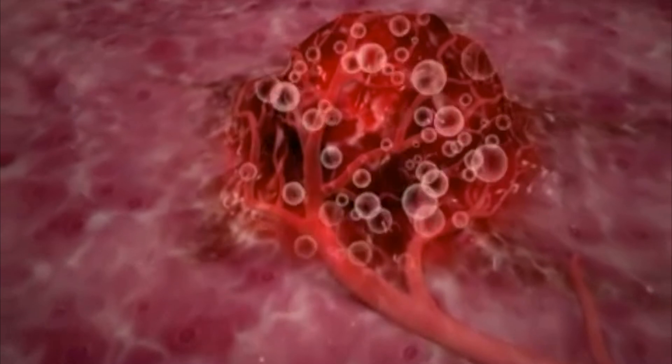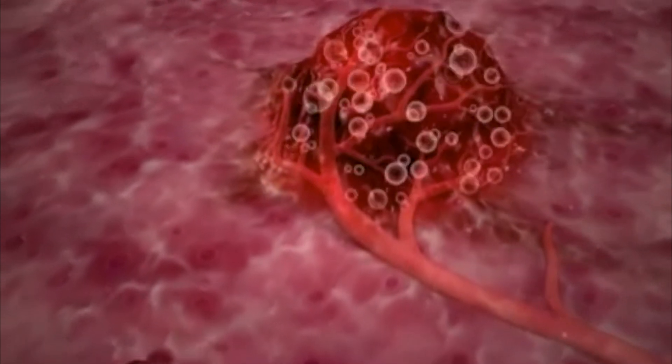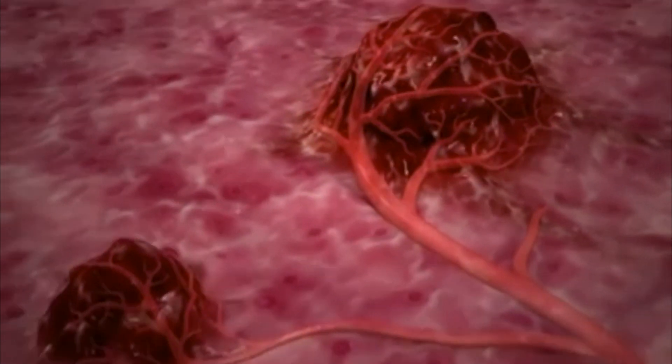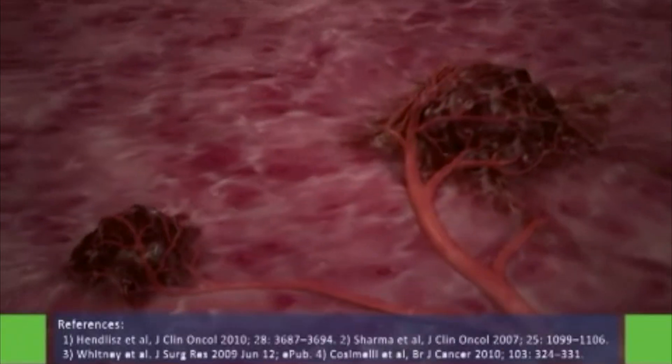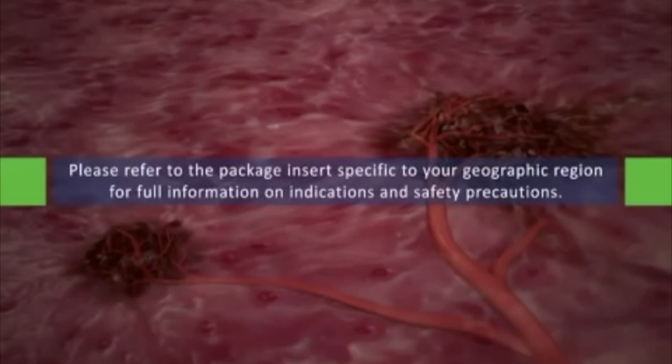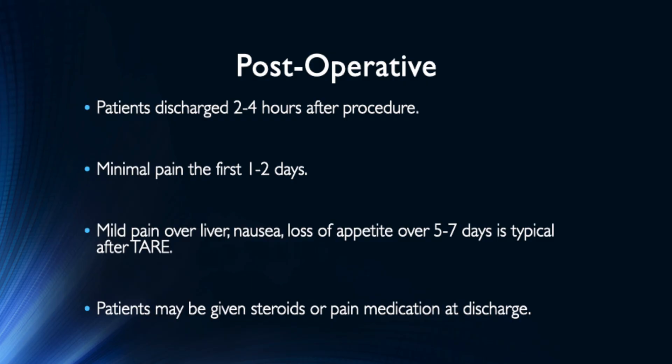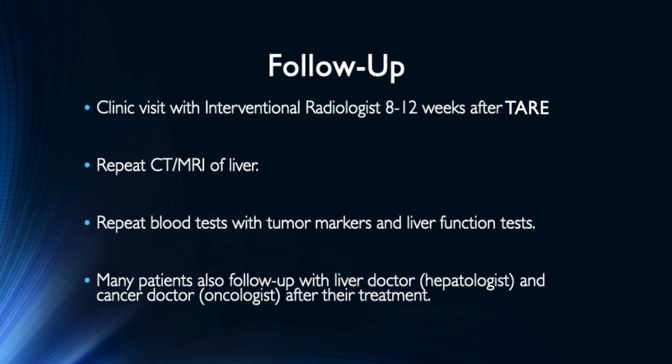Patients treated with TARE have minimal symptoms for the first couple of days. Over the following week, they typically have mild flu-like symptoms with fatigue, loss of appetite, and mild pain over the liver. Depending on the size of the area treated, patients may be given medication to treat these symptoms. To determine how successful the treatment was, we schedule patients in clinic 8 to 10 weeks after TARE. The radiation takes time to kill the tumors, which is why we wait two months.